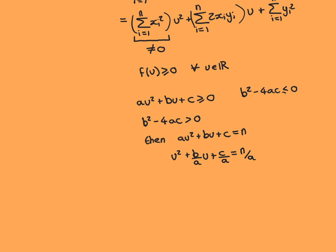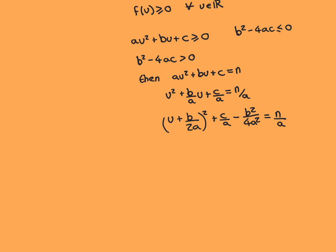We're now going to complete the square. First, divide through by a — we're assuming a ≠ 0, since the function isn't quadratic if a = 0. Dividing through by a gives u² + (b/a)u + c/a = n/a. We rewrite this as (u + b/2a)² − b²/4a² + c/a = n/a. This is a valid algebraic manipulation.